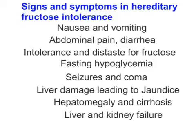Patients with hereditary fructose intolerance develop nausea and vomiting as soon as fructose-containing foods — table sugar, fruit juice, or fruits — are introduced. Patients also experience abdominal pain and diarrhea. Because of this, normal development does not proceed on time, developmental milestones are delayed, and there is growth failure in hereditary fructose intolerance. Over time, the child develops intolerance and distaste for fructose-containing foods.